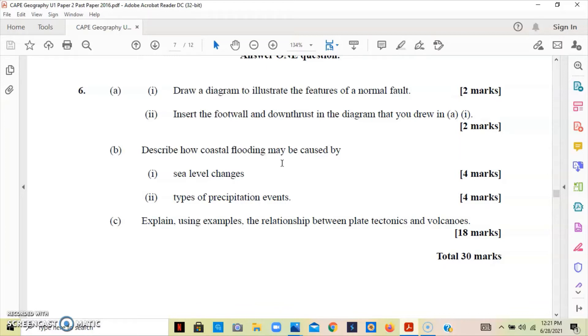Part c asks to explain using examples the relationship between plate tectonics and volcanoes. Volcanoes are basically formed when a continental and an oceanic crust meet at convergent and divergent boundaries. The continental crust is lighter than the oceanic crust, while the oceanic crust is denser than the continental crust. The oceanic crust will subduct beneath the continental crust and melt.